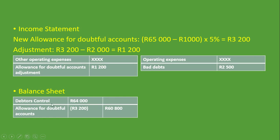Then we deduct the new Allowance for Doubtful Accounts of R3,200, which we calculated earlier. This gives us a total net realizable amount of R60,800. So in the Balance Sheet it is Debtors Control minus the new Bad Debt from Additional Information, minus the new Allowance for Doubtful Accounts, to give us a net realizable amount of R60,800.